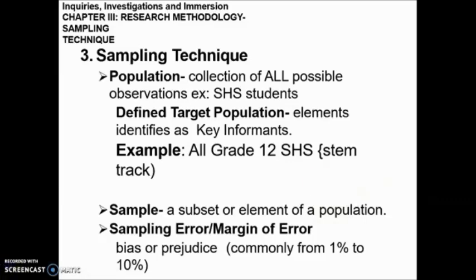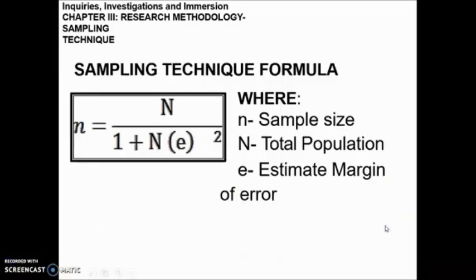If we incorporate the margin of error for example for 10,000 senior high students with STEM track, the sample size will be less than 10,000. For our sampling technique formula, we use: n (sample size) = N (total population) divided by 1 plus N times E squared, where E is the margin of error.